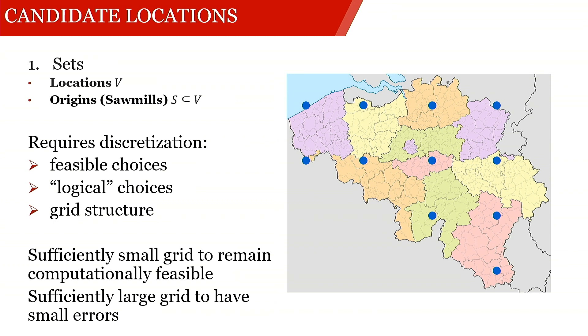But on the other side, we need to be sufficiently large in the grid, so we need sufficiently large set S such that we have sufficiently small errors, because of course it makes a difference if I'm placing a sawmill here or 50 kilometers down the road. So this is the trade-off that we're facing if we're looking into locating on a grid.